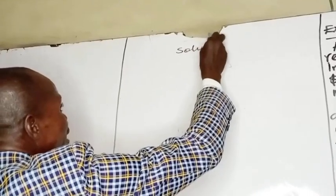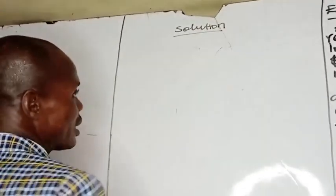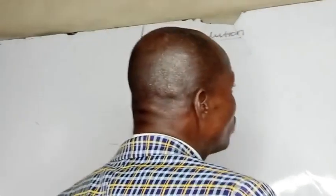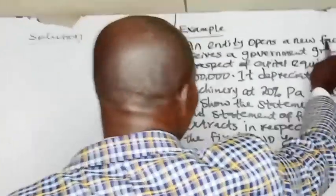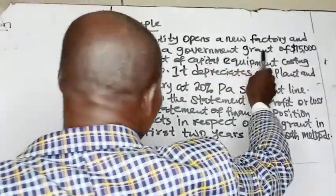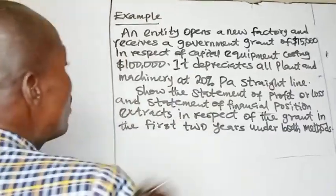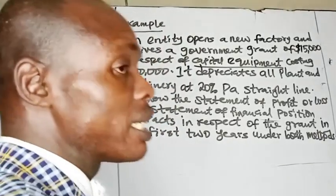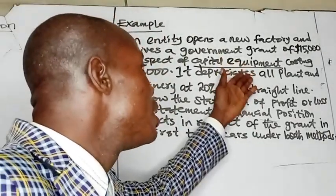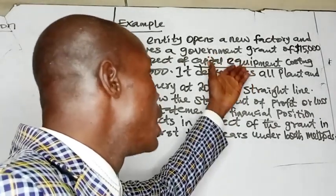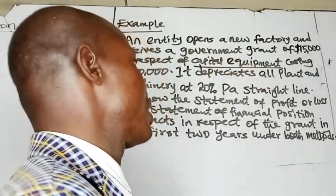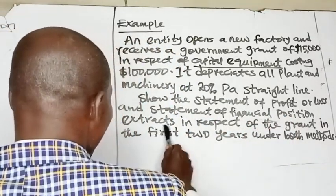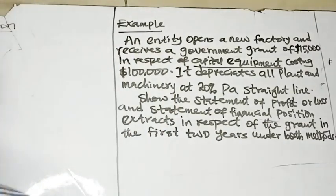The first thing is to identify the type of grant. The entity receives a grant of $15,000 in respect of capital equipment. Capital equipment is an asset, which shows that this is a grant related to assets. We need to show the statement of profit or loss and statement of financial position extracts for the first two years.